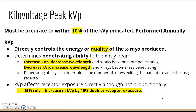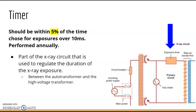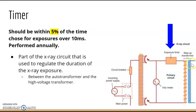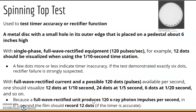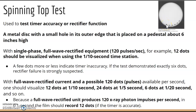The timer should be within 5% of the time chosen for exposures over 10 milliseconds. The spinning top test is one of the tests used to test timer accuracy. There are two different types: for single phase equipment, the spinning top produces dots — 12 dots at 1/10th second, 24 dots at 1/5th second.